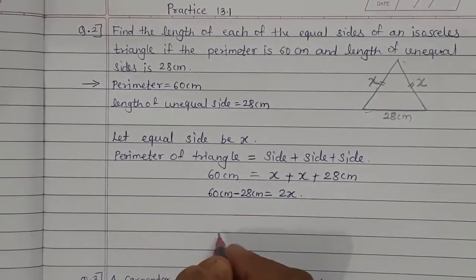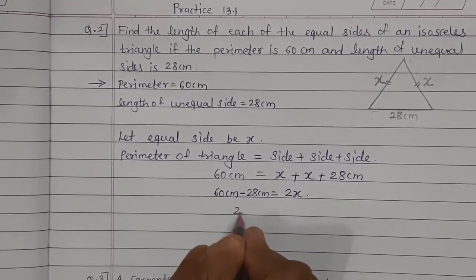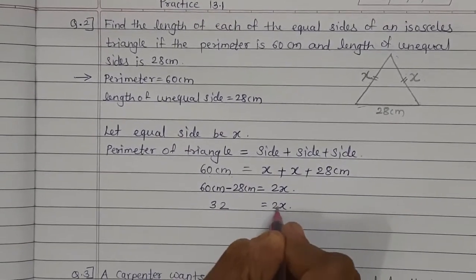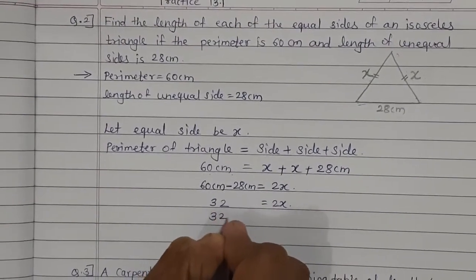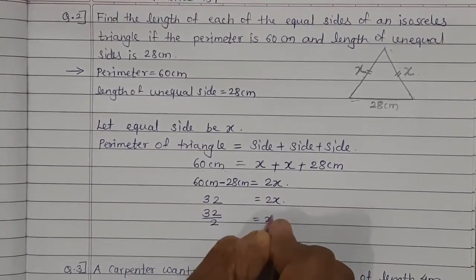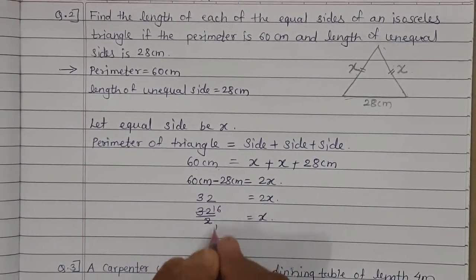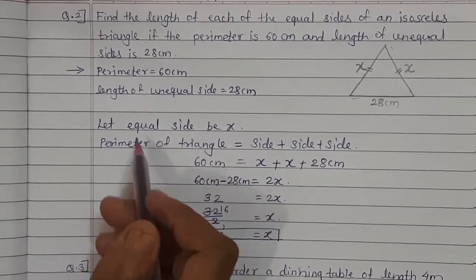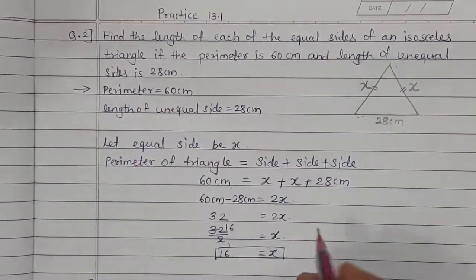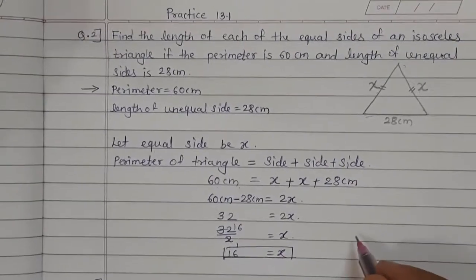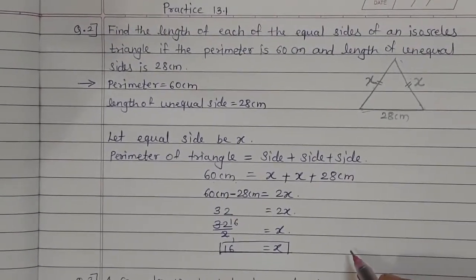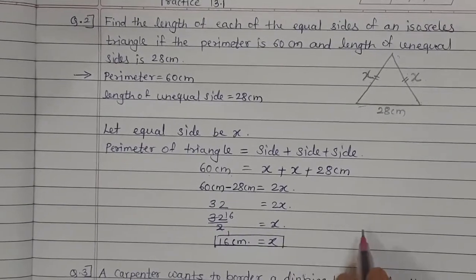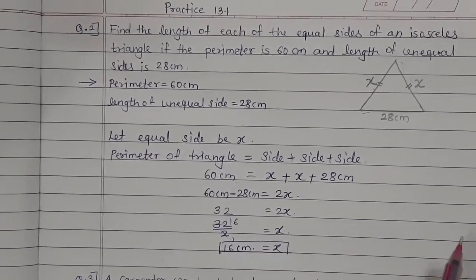Now do the calculation: 60 minus 28. 0 minus 8 is not possible, so take a borrow — 10 minus 8 is 2, and 5 minus 2 is 3. So 2x = 32. Transferring 2 to the other side it becomes divided: x = 32 ÷ 2 = 16. So the length of each of the equal sides of the isosceles triangle is 16 centimeters.